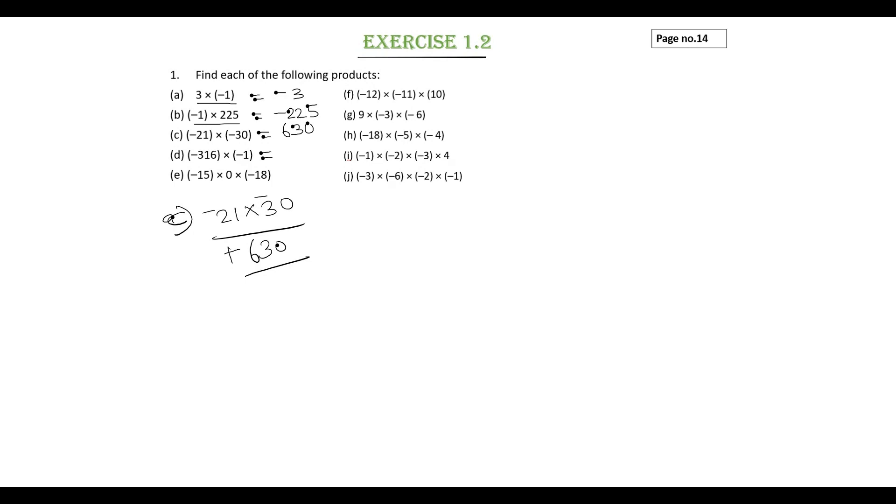Next is subdivision d: minus 316 into minus 1. So any integer multiplied by minus 1 gives the opposite sign. Minus 316 becomes plus 316.